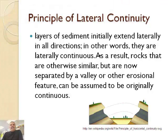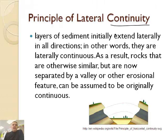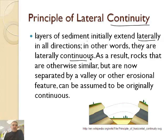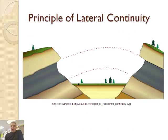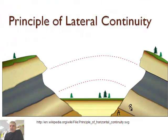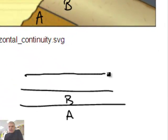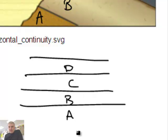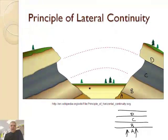The next one is called the principle of lateral continuity. If something is continuous, it continues. Layers of sediment initially extend laterally in all directions — they are laterally continuous. As a result, rocks that are otherwise similar but are now separated by a valley or other erosional feature can be assumed to be originally continuous. If we call these layers A, B, C, and D, A was layered first and they were all together. But then there was an uplift moment, and the whole center of this got eroded away.